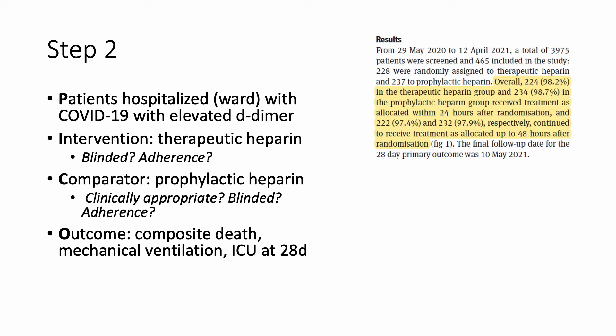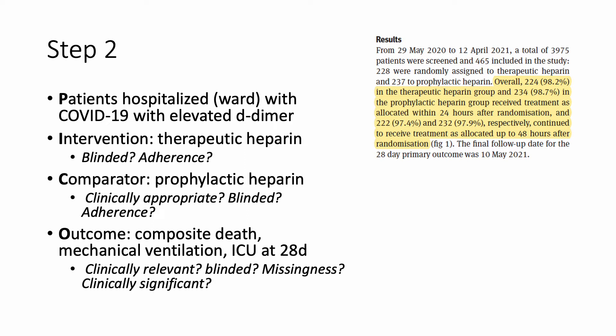The outcome in this study was a composite of death, mechanical ventilation, or ICU admission at 28 days. When reading any outcome in a randomized trial, ask: is it clinically relevant — will my patients care about it? Was it blinded? How much missingness was there? Death, mechanical ventilation, and ICU admission are absolutely clinically relevant. Our trial was unblinded; however, outcome adjudication was blinded, which is certainly helpful. If there's a lot of missingness in your outcome, it's going to be hard for a study to have high validity.